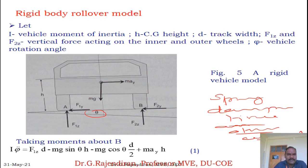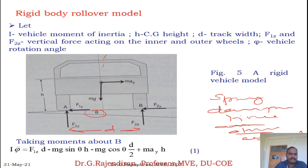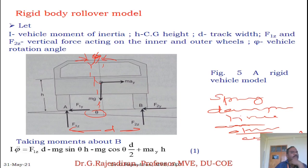F1Z and F2Z are the vertical forces acting on the inner and outer wheels. When a vehicle is making a turn, there may be a roll angle phi. So phi is the vehicle rotation angle. Taking moments with respect to point B, where point A is the tyre contact patch with the ground of the inner wheel and point B is the tyre contact patch of the outer wheel.